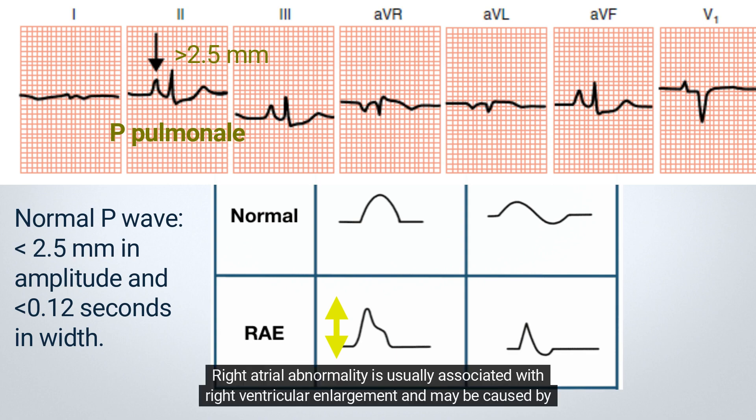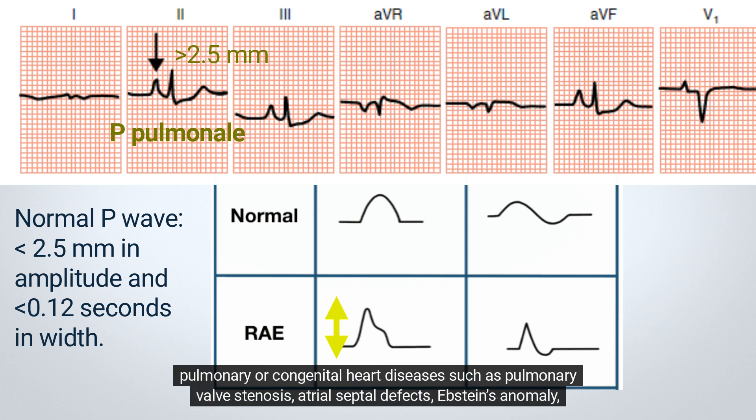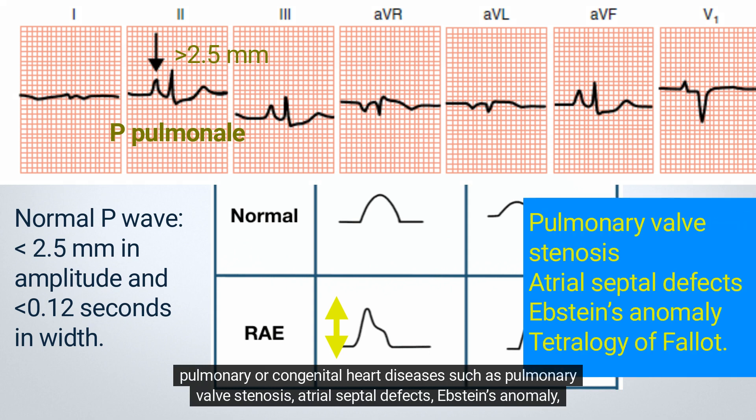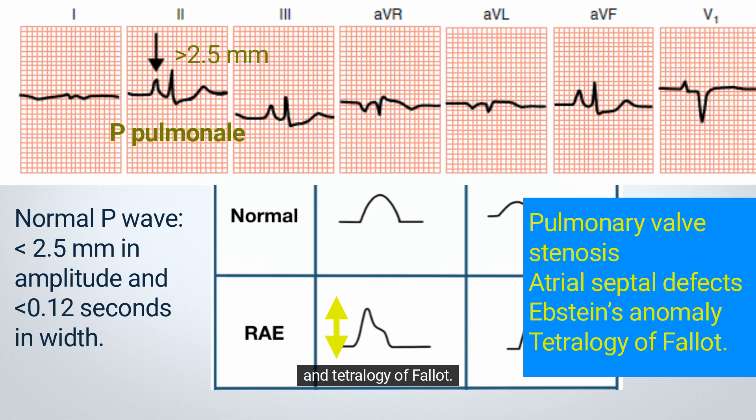Right atrial abnormality is usually associated with right ventricular enlargement and may be caused by pulmonary or congenital heart diseases such as pulmonary valve stenosis, atrial septal defects, Ebstein's anomaly, and tetralogy of Fallot.